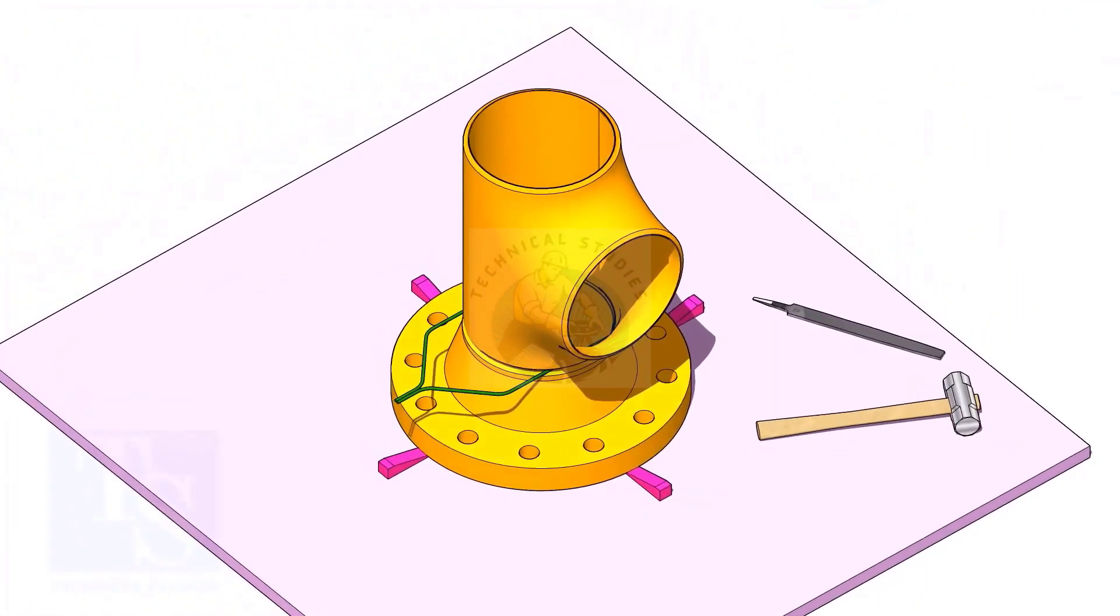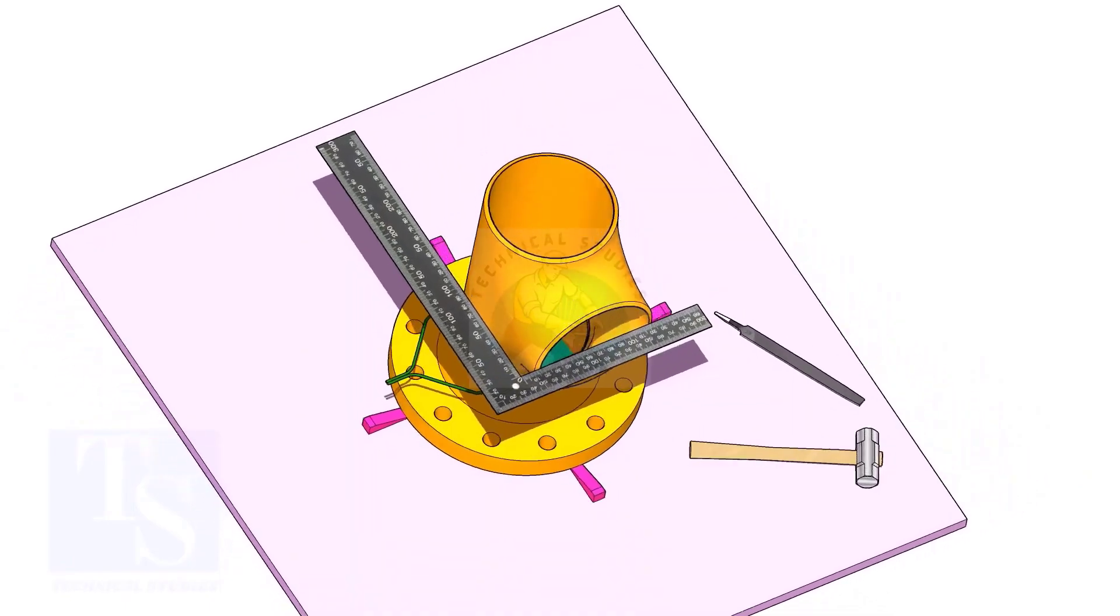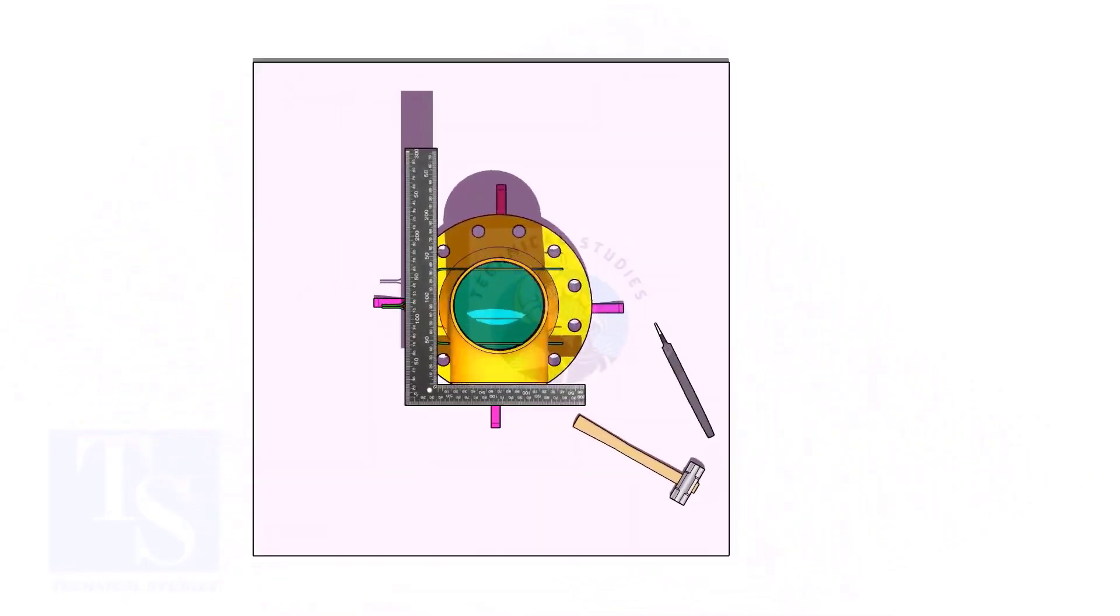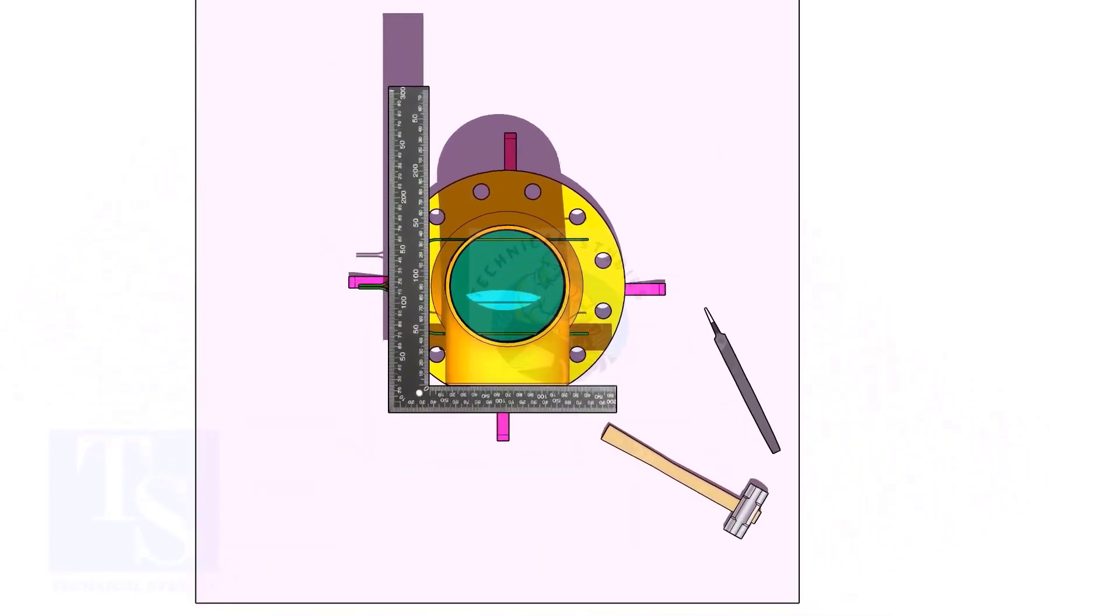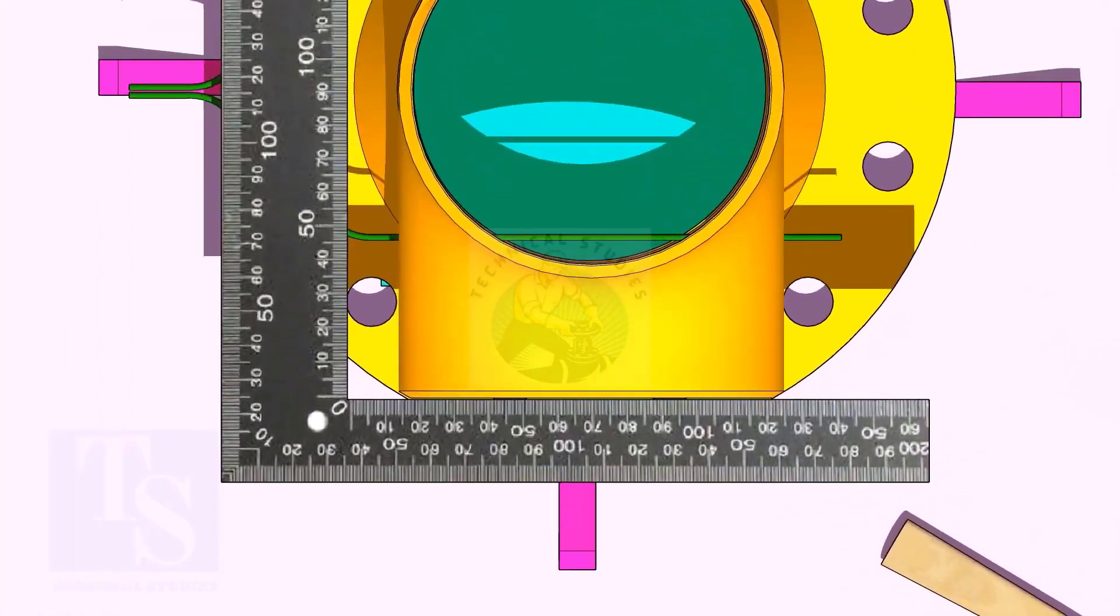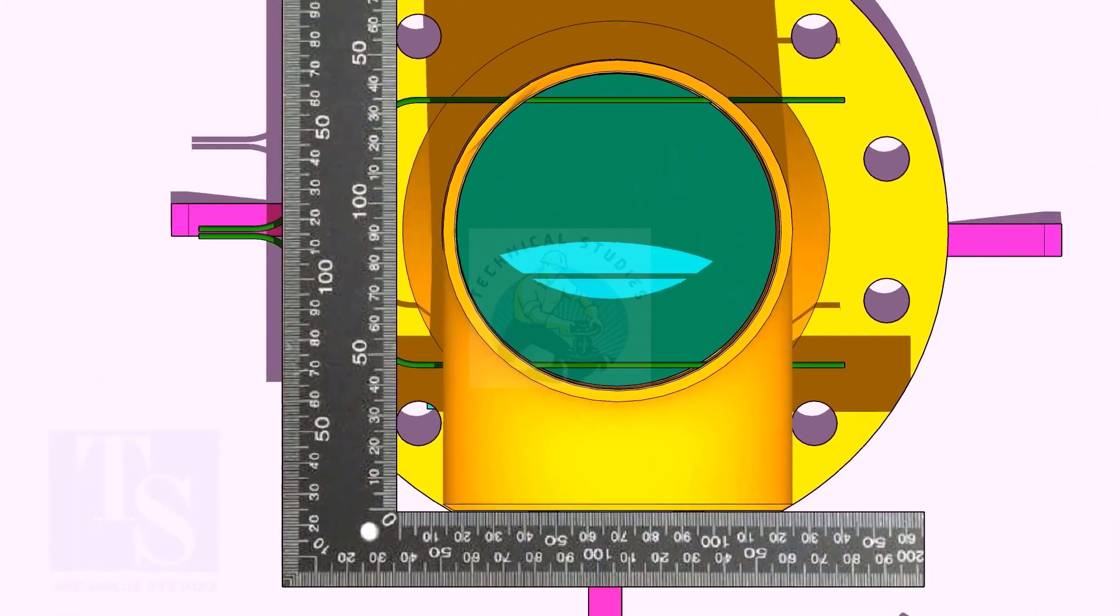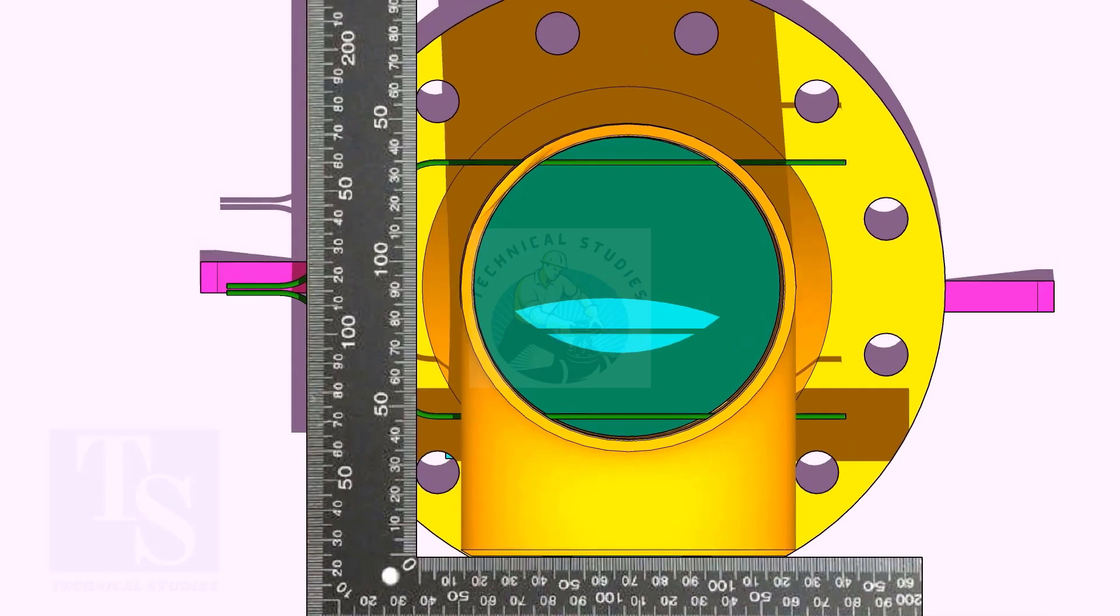Put the tee on the flange. Match the hole center of the flange and the tee face as shown. Correct the overlap.